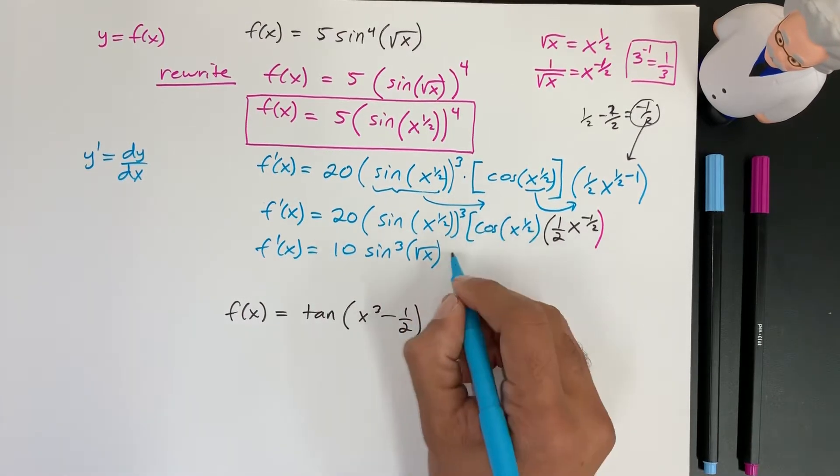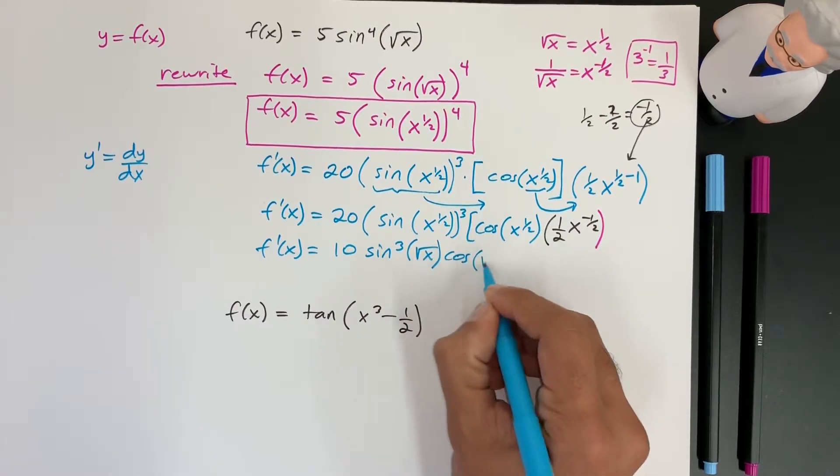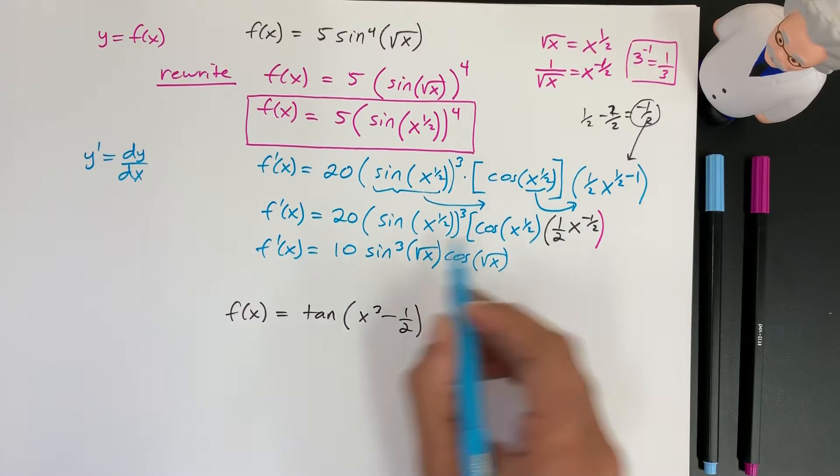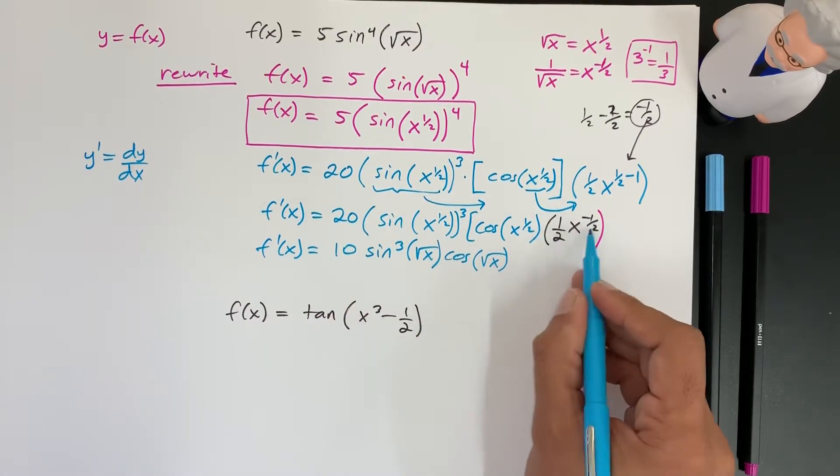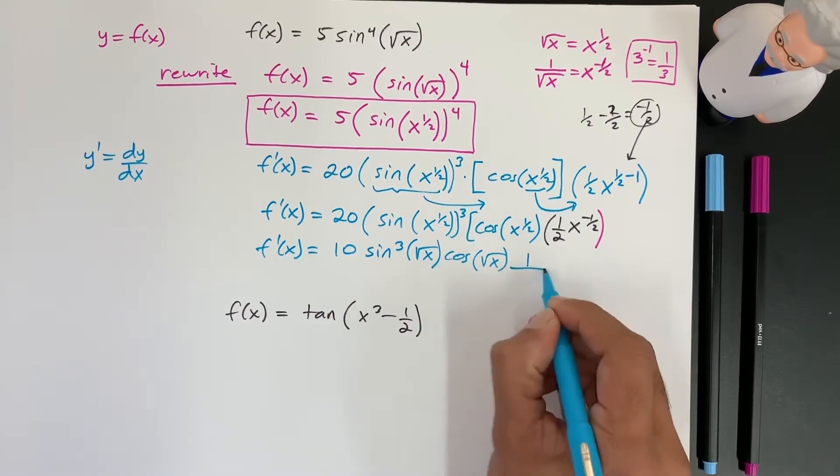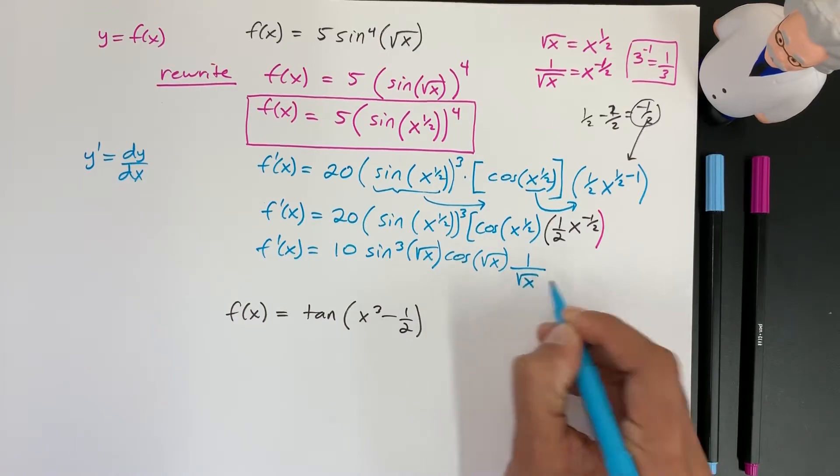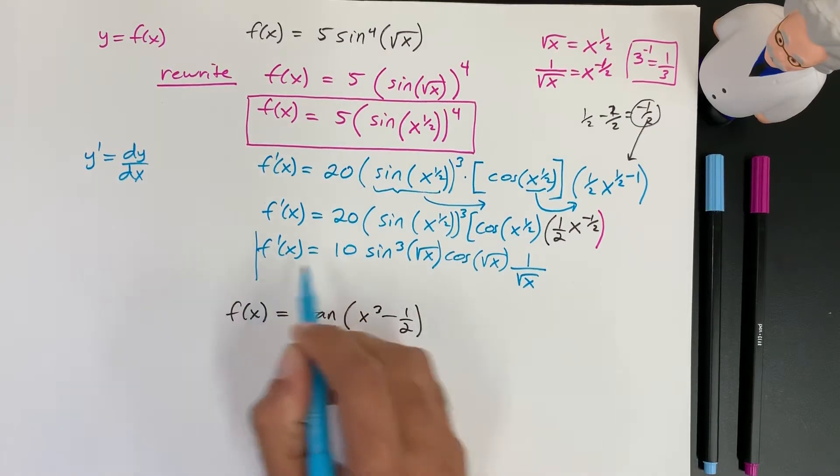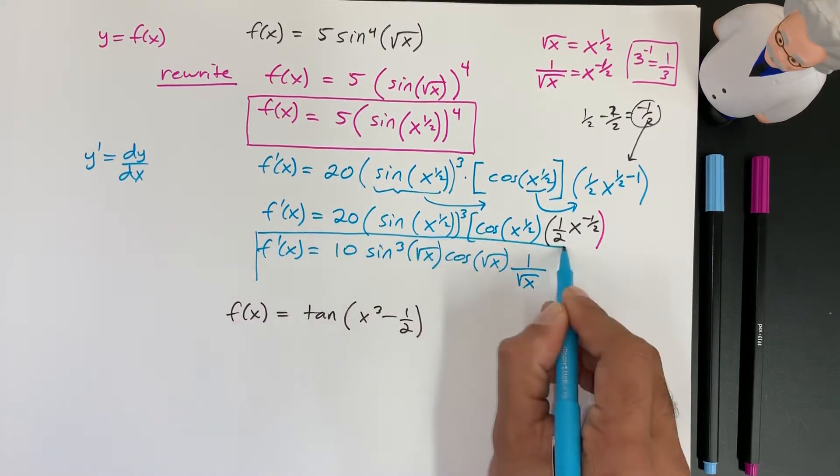And we have this term, which is cosine of the square root of x. And then we got rid of the 2 with this. And this term here is 1 over the square root of x. We can't combine that with anything else. So this right here is going to be our final answer.